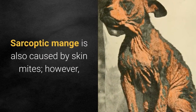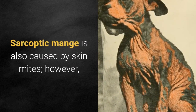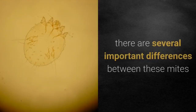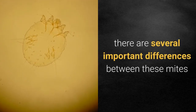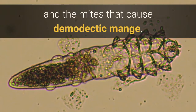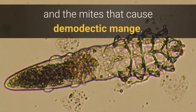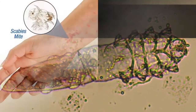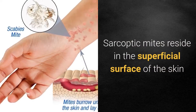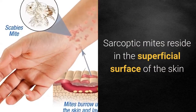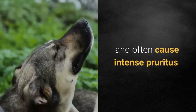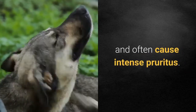Sarcoptic mange is also caused by skin mites; however, there are several important differences between these mites and the mites that cause demodectic mange. Sarcoptic mites reside in the superficial surface of the skin and often cause intense pruritus.